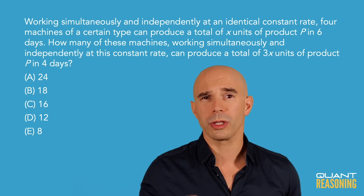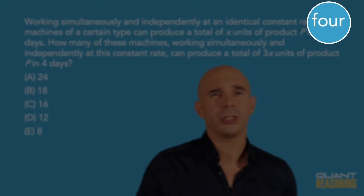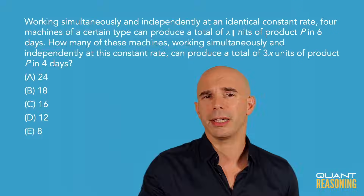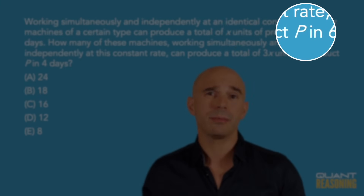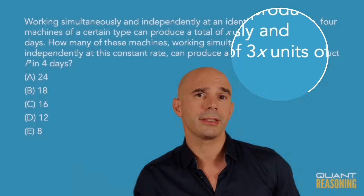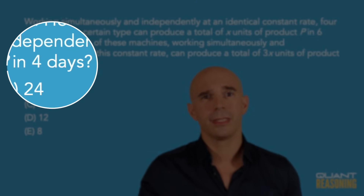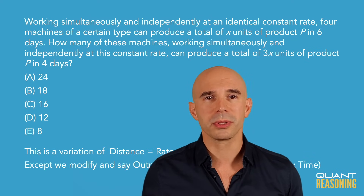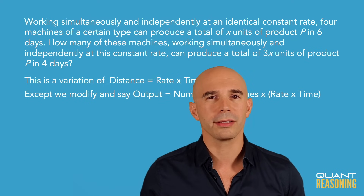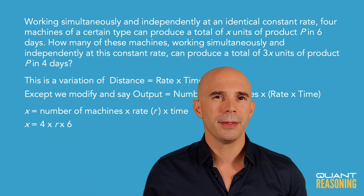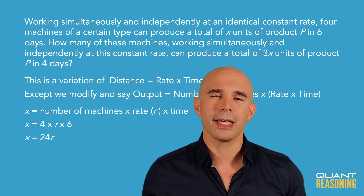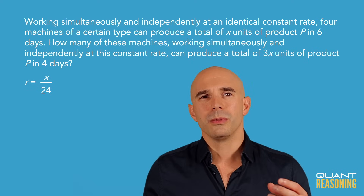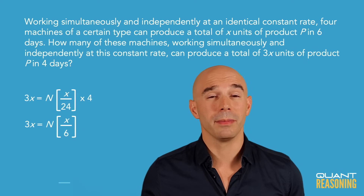Check out this official GMAT word problem talking about four machines that can produce X units in six days, but we want to produce three X units in four days. There's a kind of textbook math — a mindless, memorizable procedure that people acquire to try to get through questions like this. But that causes a lot of anxiety on the test, takes longer than it should, and folks tend to make mindless mistakes when they use a mindless procedure.